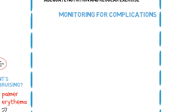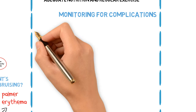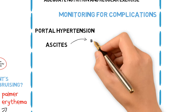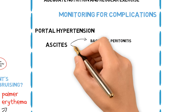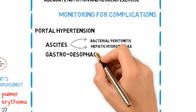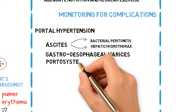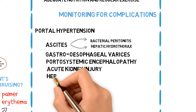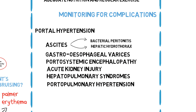Monitoring for complications. Cirrhosis is associated with serious complications including portal hypertension causing ascites, further complicated by spontaneous bacterial peritonitis and hepatic hydrothorax, gastroesophageal varices and portosystemic encephalopathy, acute kidney injury and hepatopulmonary syndromes, portopulmonary hypertension, and hepatocellular carcinoma. Prompt detection and treatment of these complications is essential to minimize related morbidity and mortality.